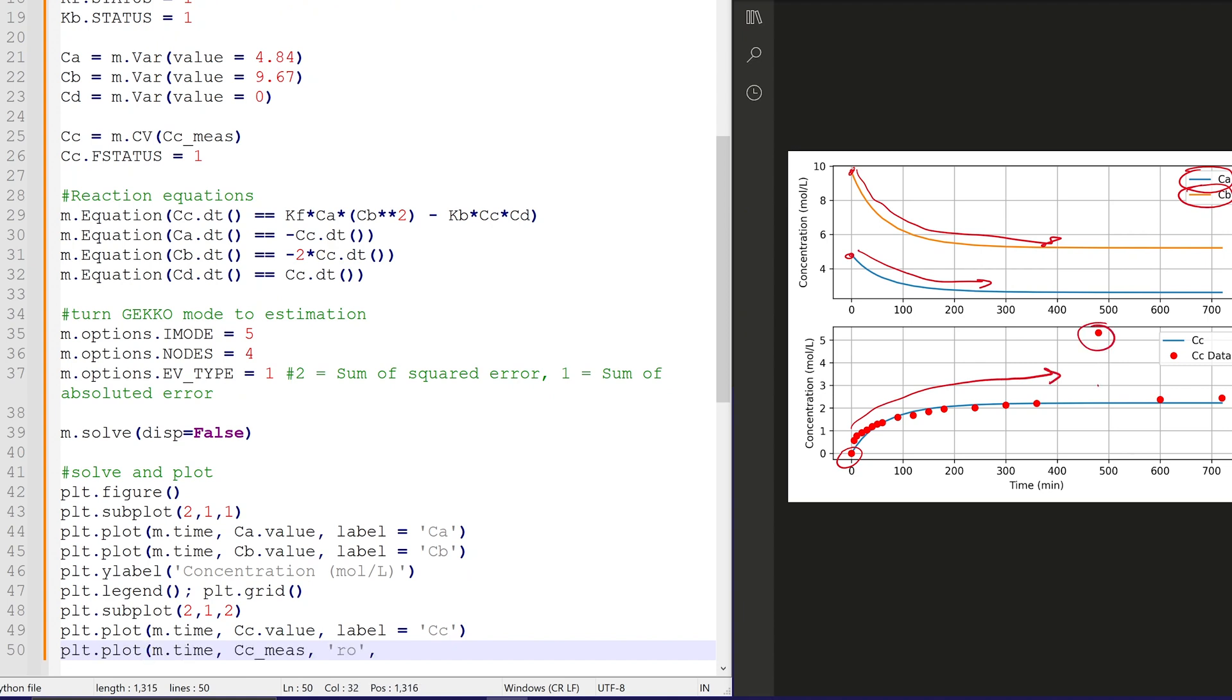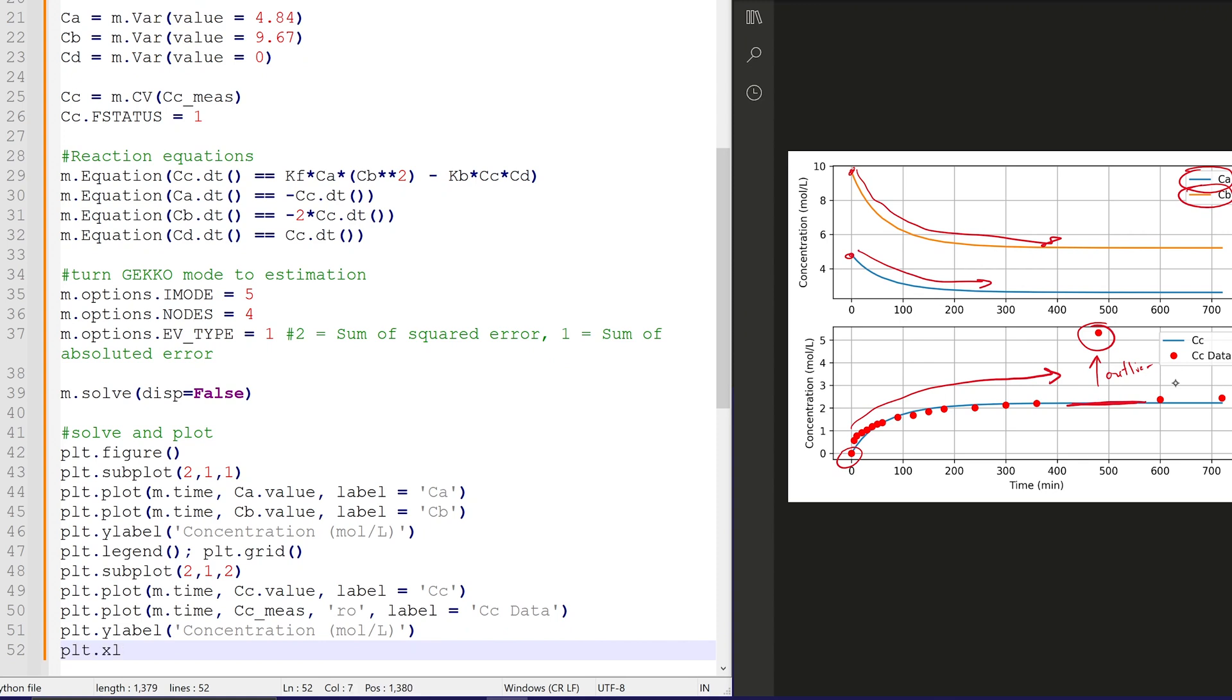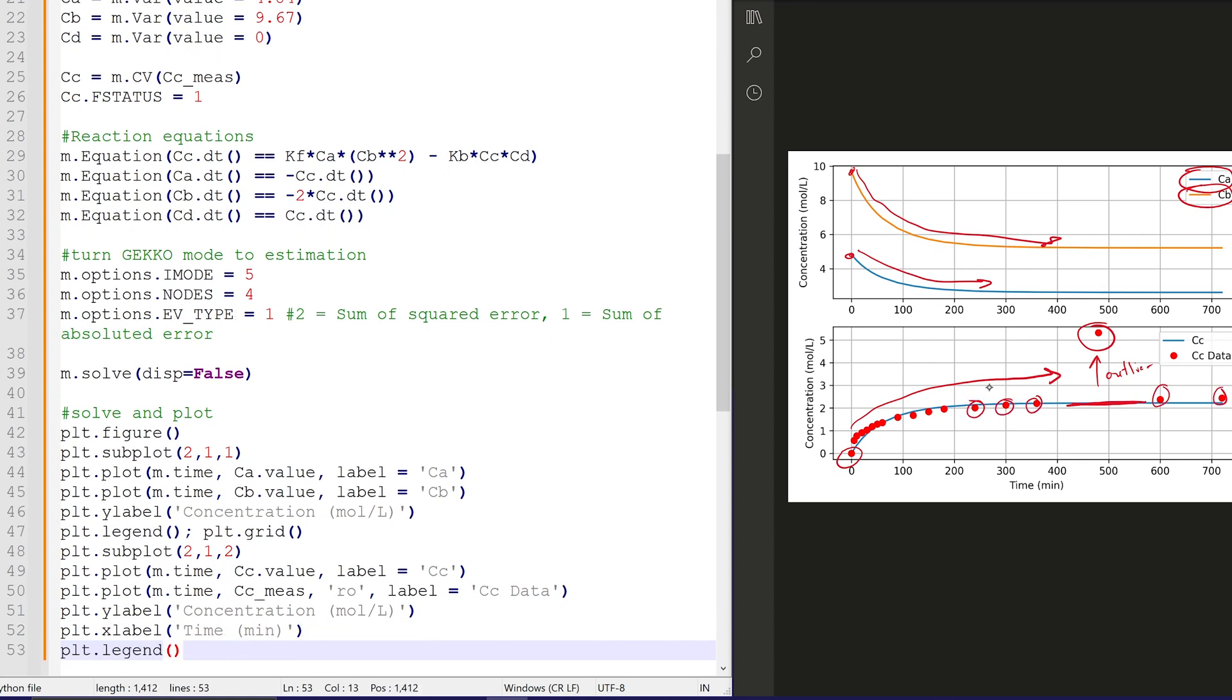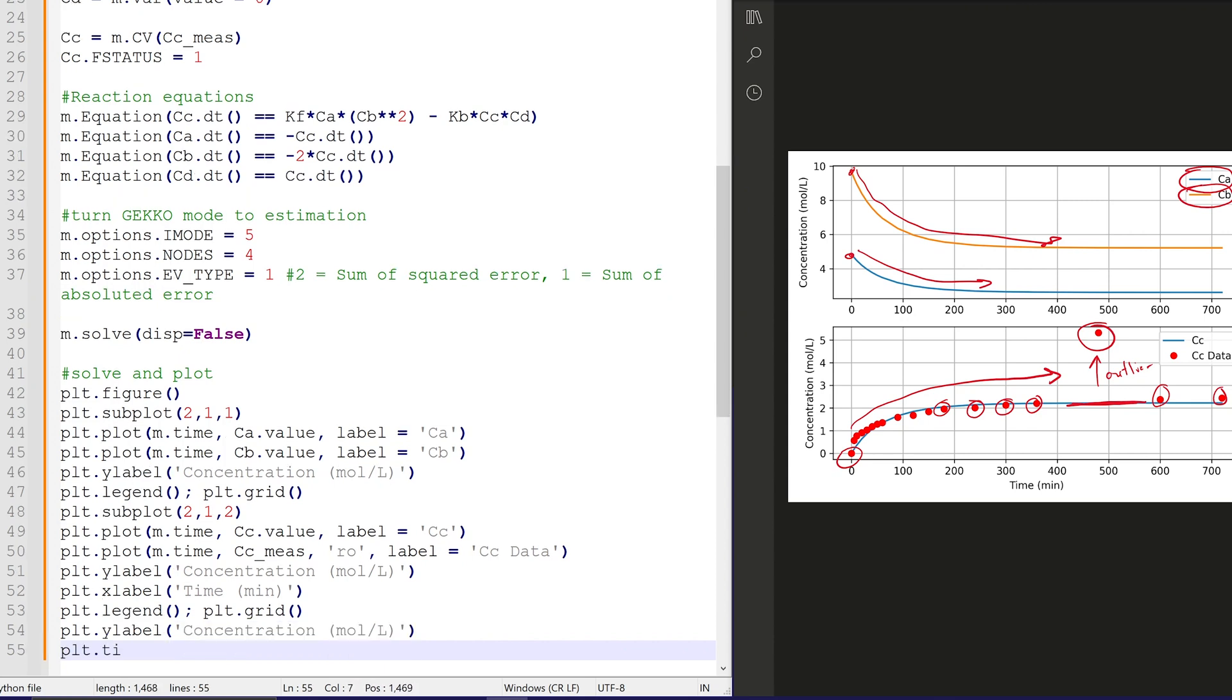Now in the bottom subplot, this is where we put in our measurements. And we can see the outlier here and how the solution is not influenced by that outlier because of the L1 norm. So it's like a consensus. We're doing a regression on a consensus of most of the points and ignore the ones that are outliers.